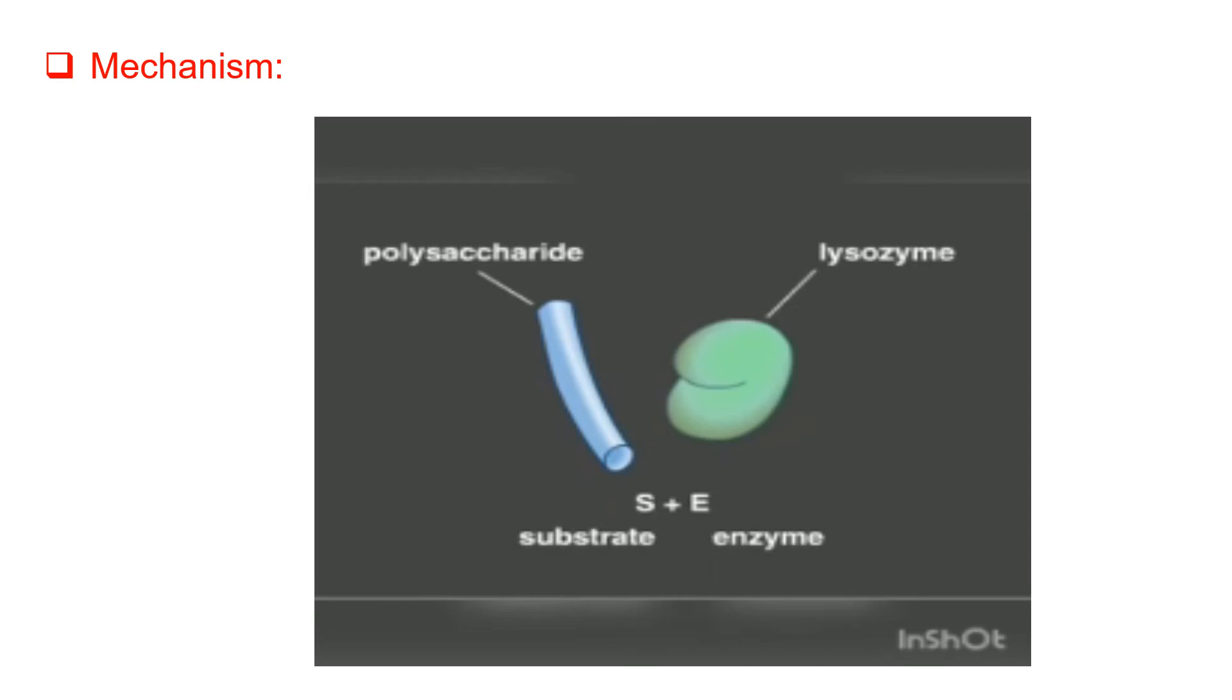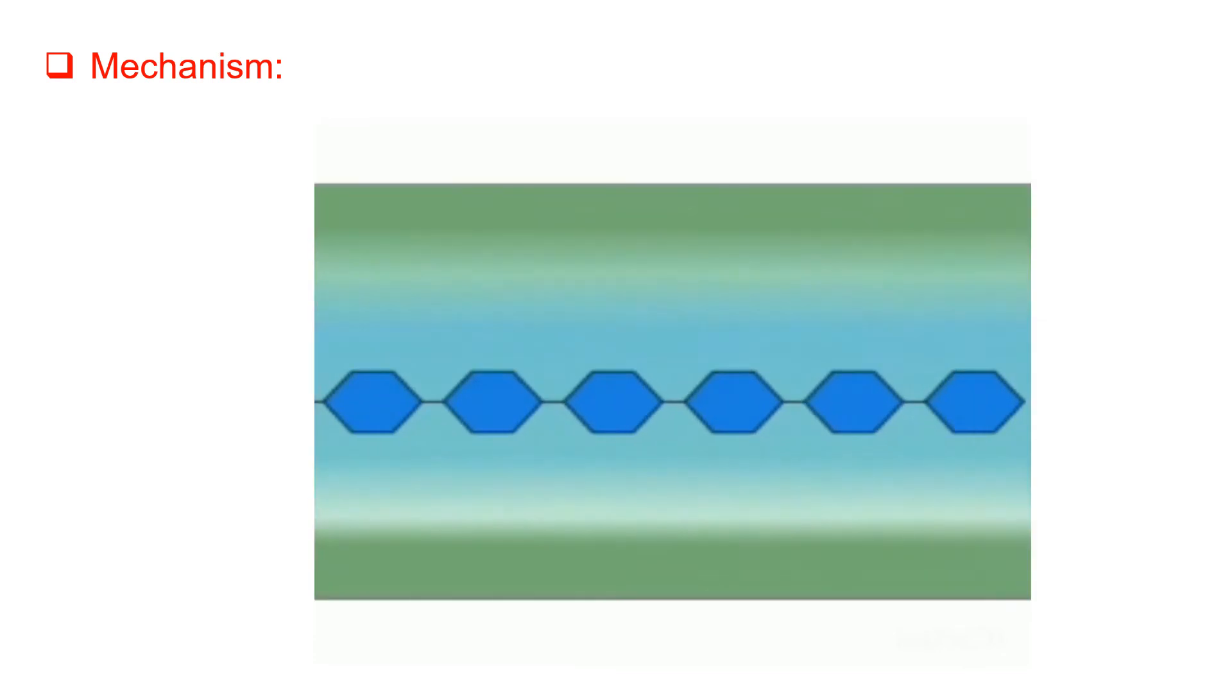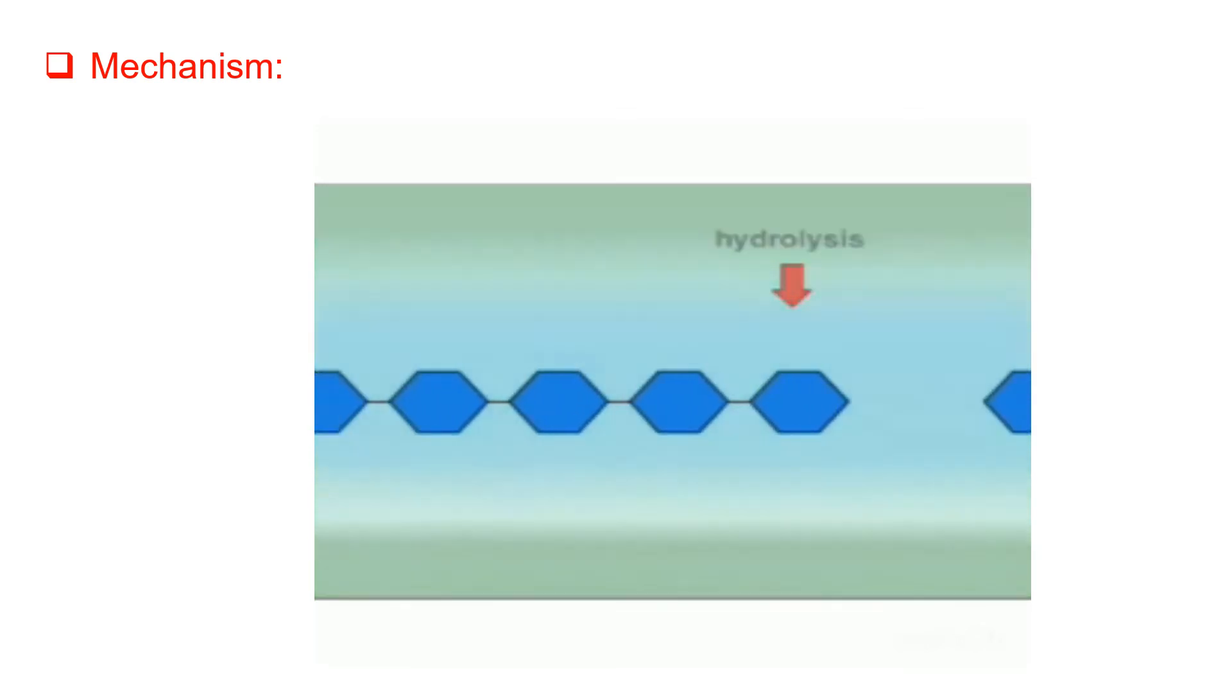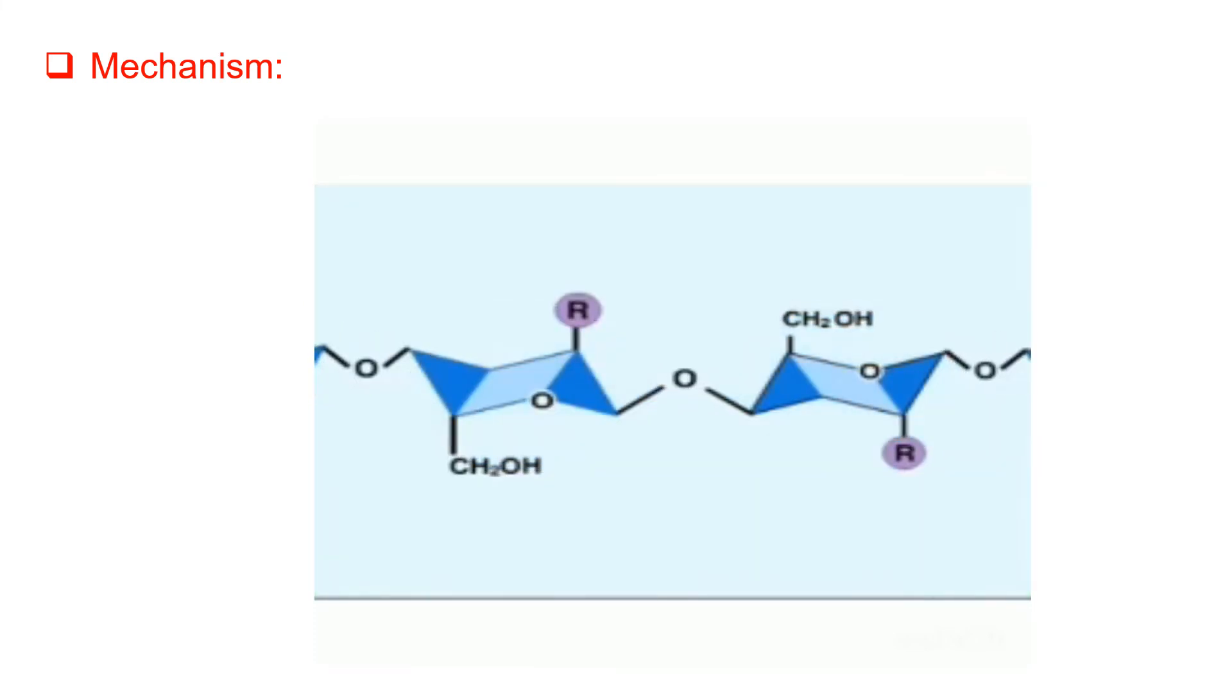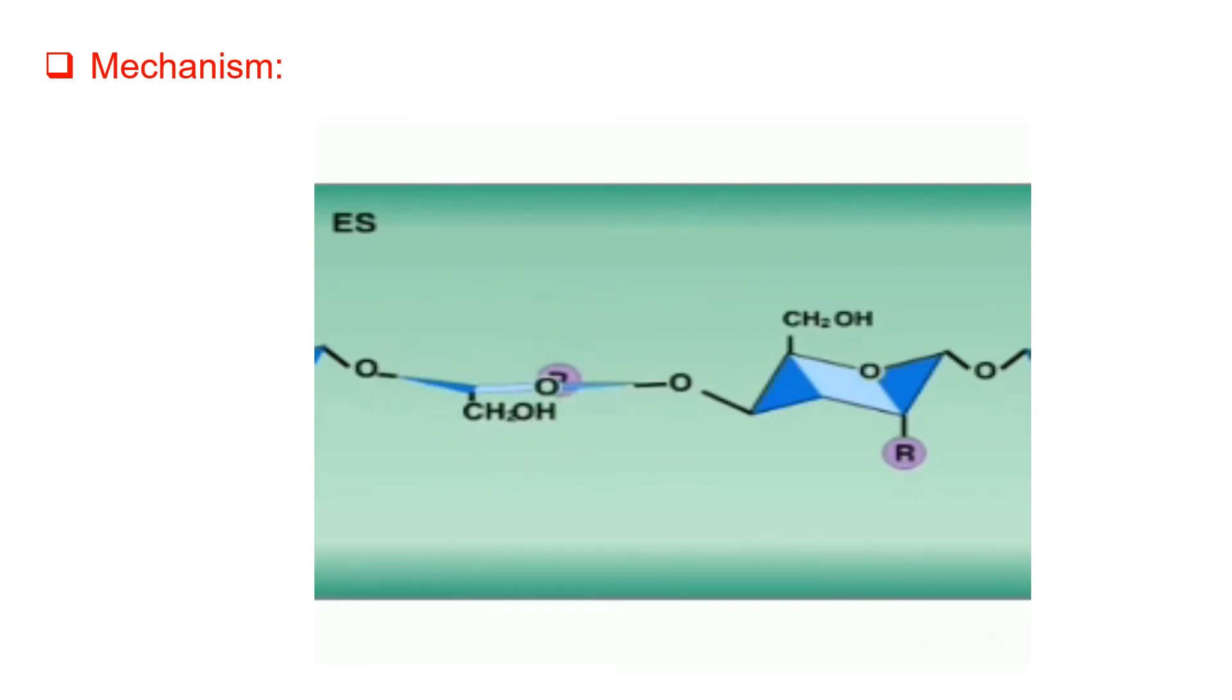In this part we can see all the steps of the mechanism of NAM to hydrolyze the polysaccharide. Initially NAM is forced to have a half-chair conformation by the enzyme. The half-chair conformation allows attack by amino acid aspartate 52 as an efficient residue, and this conformation provides enough space for direct backside attack.